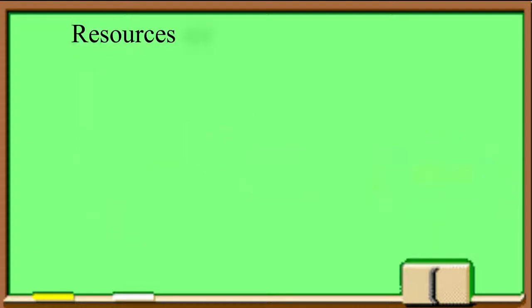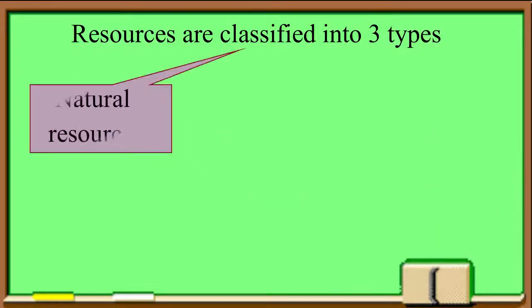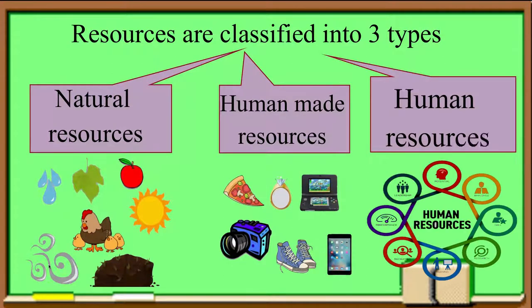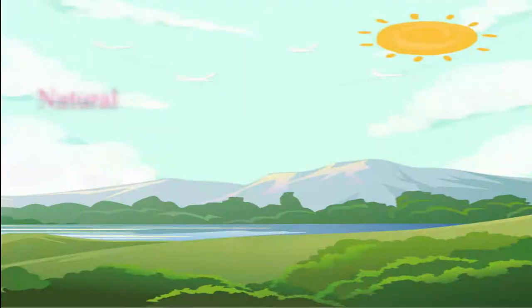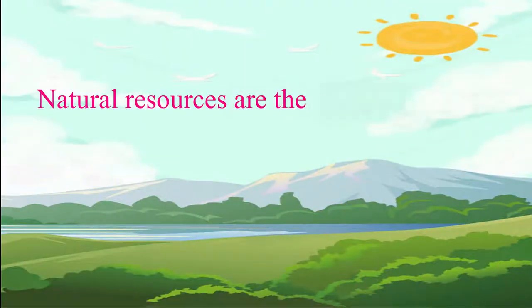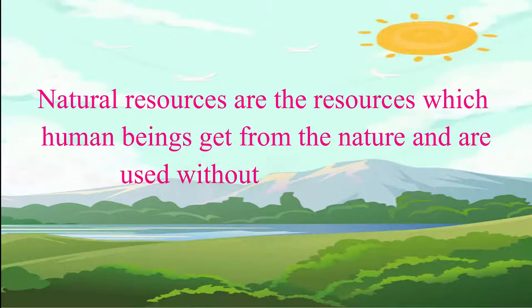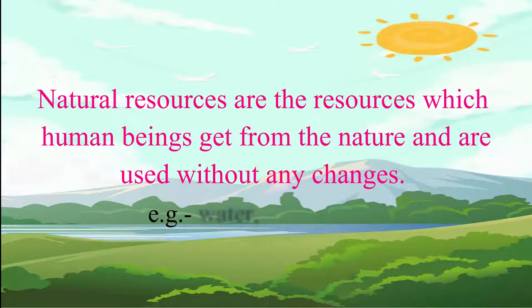Resources can be classified into three types: natural resources, human made resources, and human resources. Natural resources are the resources which human beings get from nature and are used without any changes. For example, water, forest, etc.